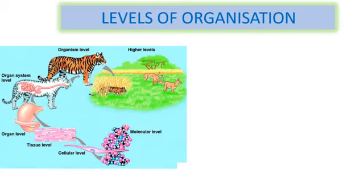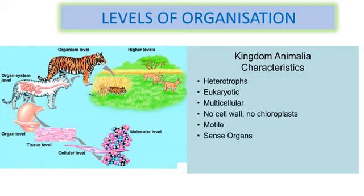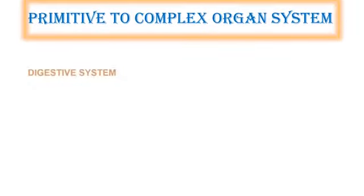All members of kingdom Animalia are multicellular and they show different levels of organization — from molecular level, cellular level, tissue level, organ level, and that develops into an organ system and organism level. The main common characteristics of kingdom Animalia are: they are heterotrophs, depending on other organisms for their nutrition; they are eukaryotic and multicellular; their cells lack cell wall; they are motile, moving from one place to another.